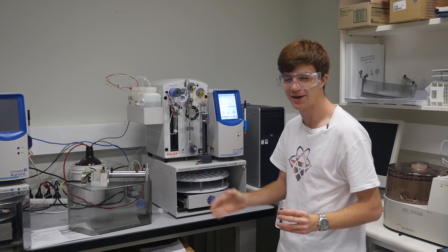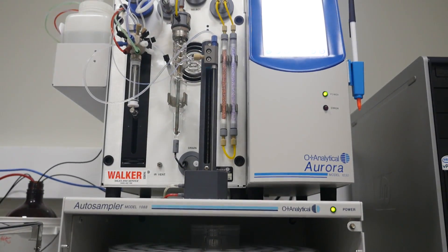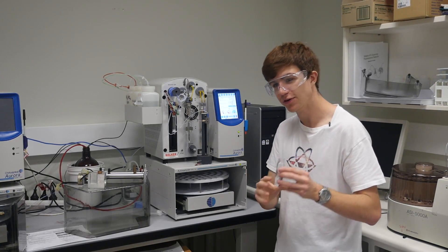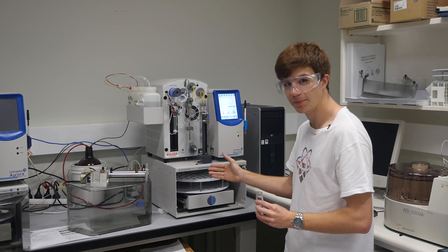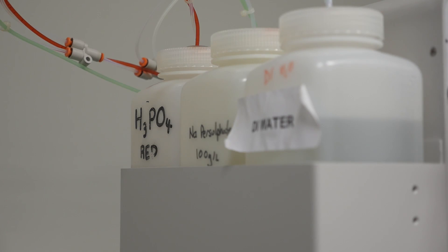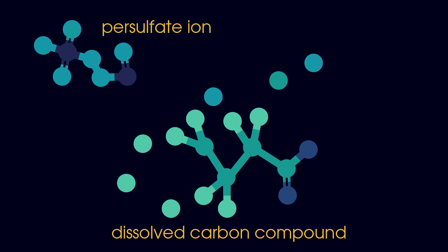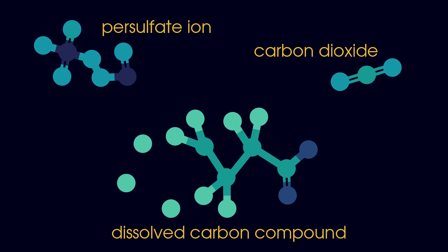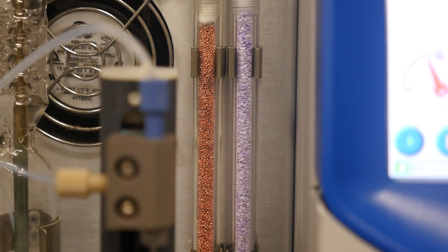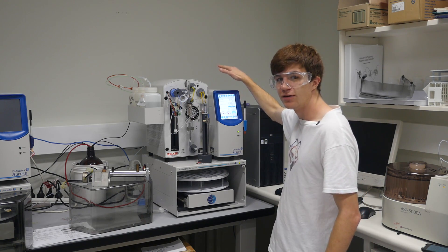This is a total organic carbon analyzer. Scientists use this setup to test for thousands of different chemicals. We begin by taking a small sample of our solution and then placing it into the auto-sampler. The sample gets combined with a number of different chemicals. This creates carbon dioxide, which bubbles to the surface. The carbon dioxide gas then goes through two scrubbers. Now, with our pure carbon dioxide, we can put it into the spectrum analyzer.